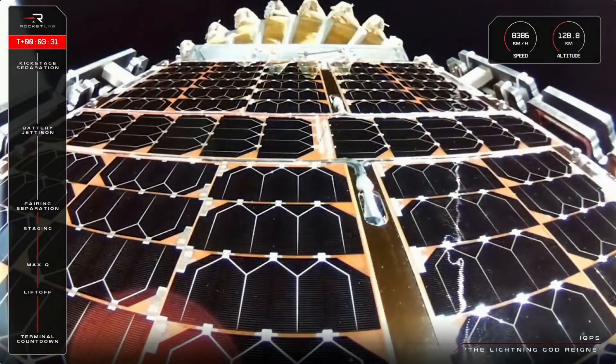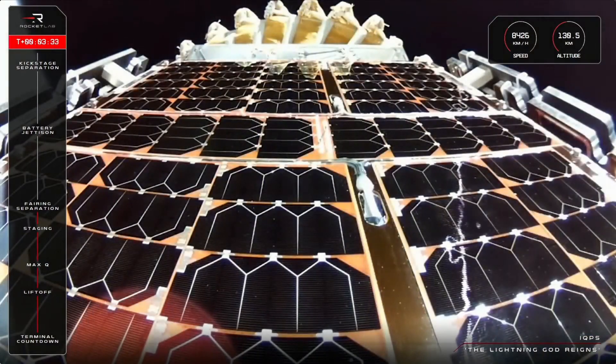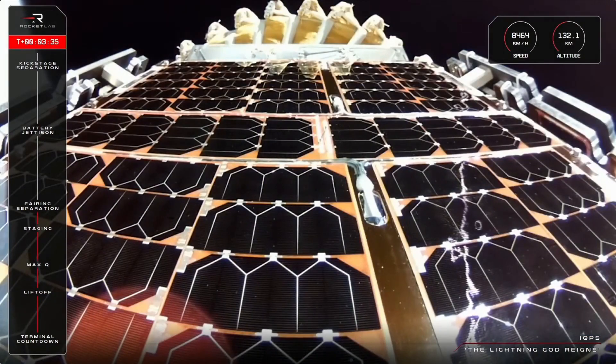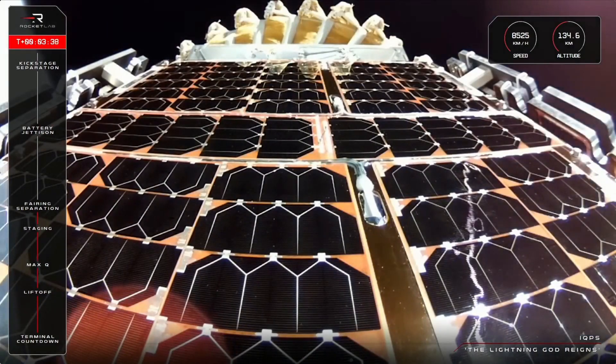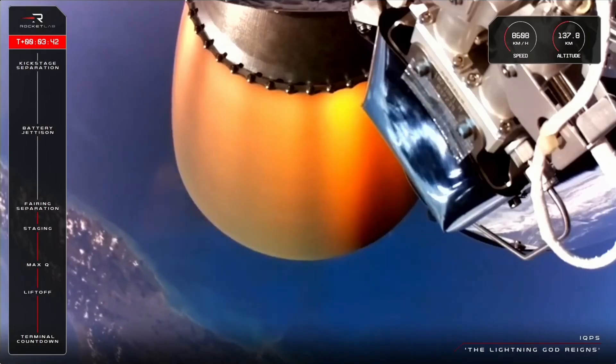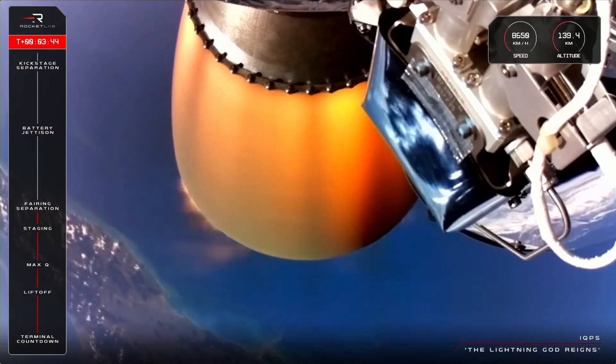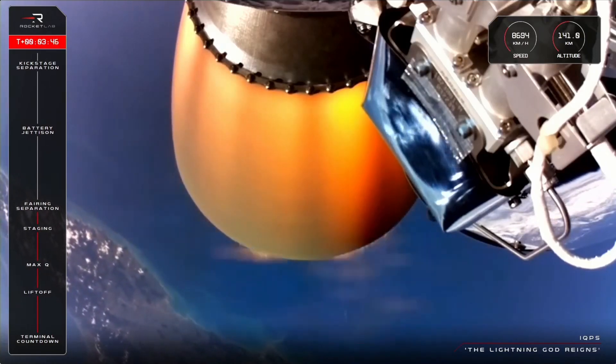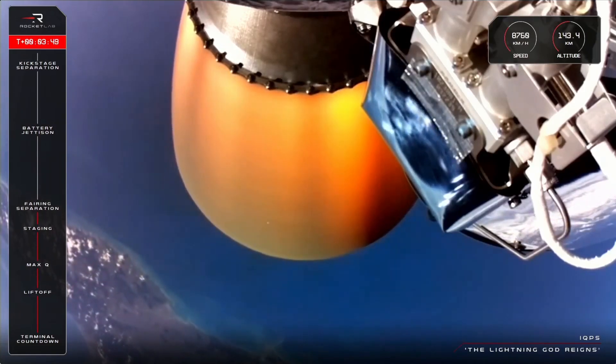Fairing jettison confirmed. And there we have it. Electron's fairing has been jettisoned, and the QPS Saar 9 now has its unobstructed view of its new home in space. We are now coming up to four minutes into the flight, with less than just a couple more minutes remaining in the second stage burn. Guidance is in the middle.